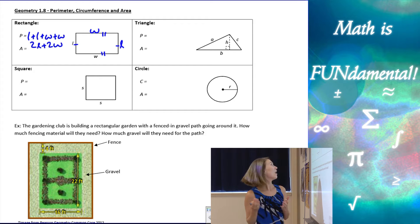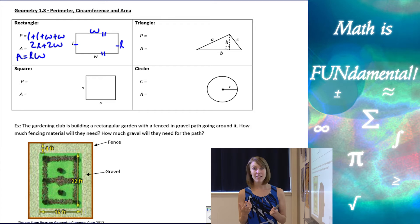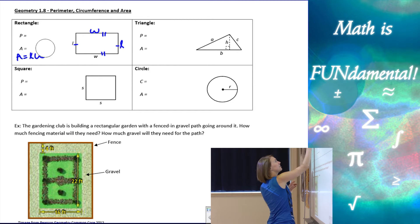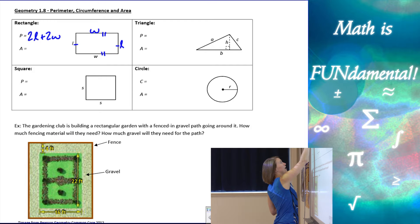Now for area, area of a rectangle is going to be just length times width. So if I take length times width, I have my area formula. So to clean this up, perimeter is 2L plus 2W and area is L times W.